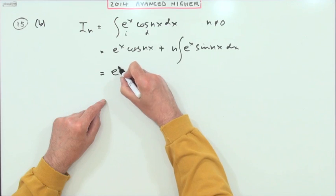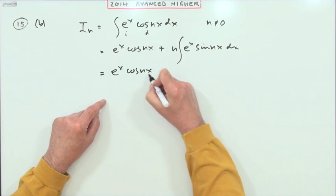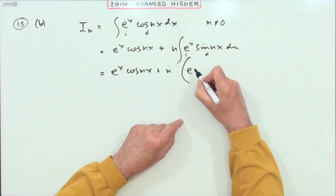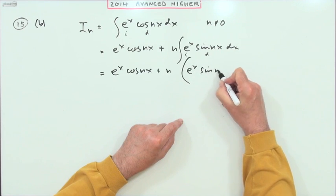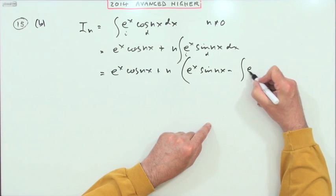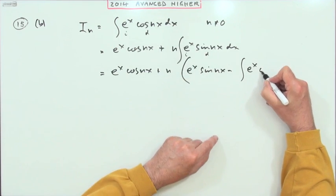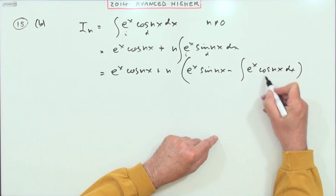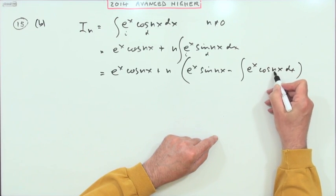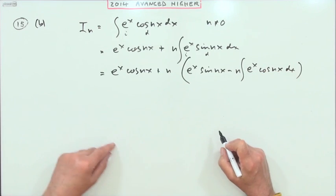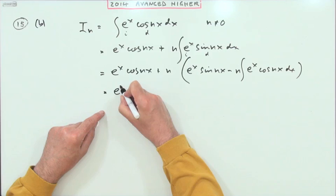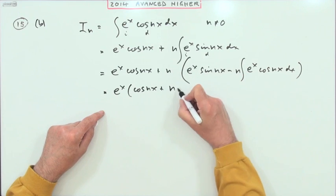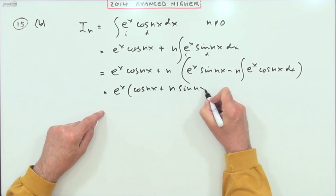So that's e^x cos(nx) plus n lots of—and then just do it again, integrate, differentiate: e^x sin(nx), minus the integral of e^x, now differentiate that back to cos(nx) dx, of course multiplied by the derivative over that little linear term there, so multiplied by n. And that means I've got e^x times (cos(nx) + n sin(nx)).